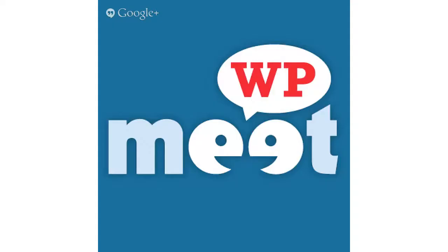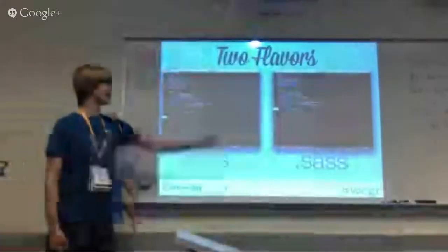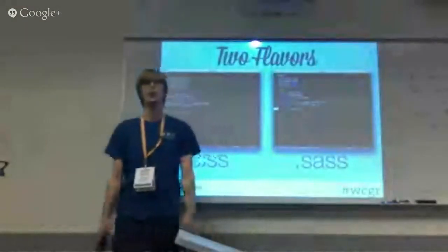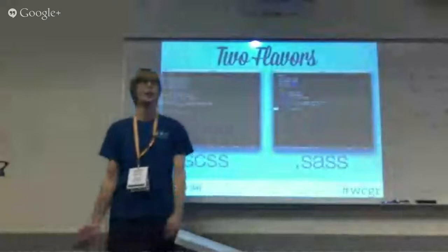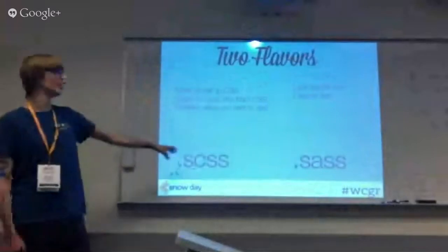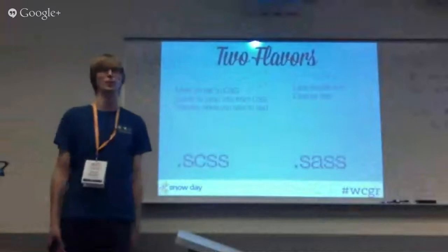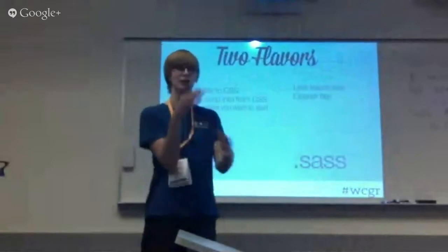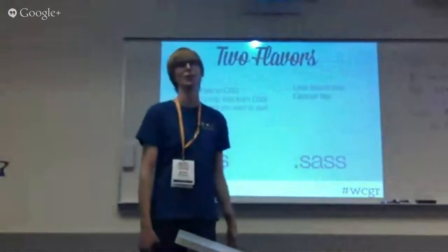There are two flavors of Sass. There's SCSS — this is what I use. It's very, very similar to CSS. There are curly brackets and semicolons. There's also .sass, which doesn't have curly brackets or semicolons, and it's all based on indentation. SCSS is way more similar to CSS — it's a lot easier to jump into because you can actually just grab your current CSS file and throw it in an SCSS file. That's probably where you want to start.